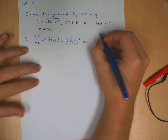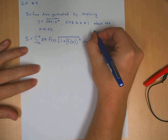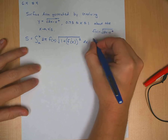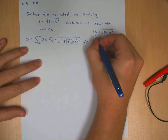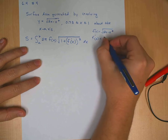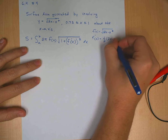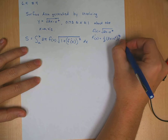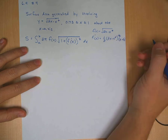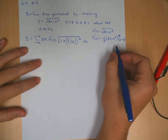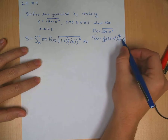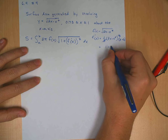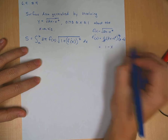First, I'm going to take the derivative. We have f(x) equal to the square root of 2x minus x squared. For f prime of x, using the chain rule: bring down the half, rewrite the inside with a negative half exponent, and the derivative of the inside is 2 minus 2x. Simplifying, we cancel the 2s, leaving 1 minus x on top over the square root of 2x minus x squared on the bottom.